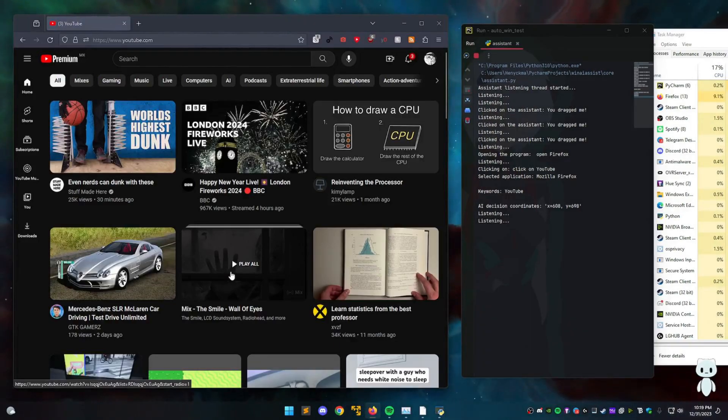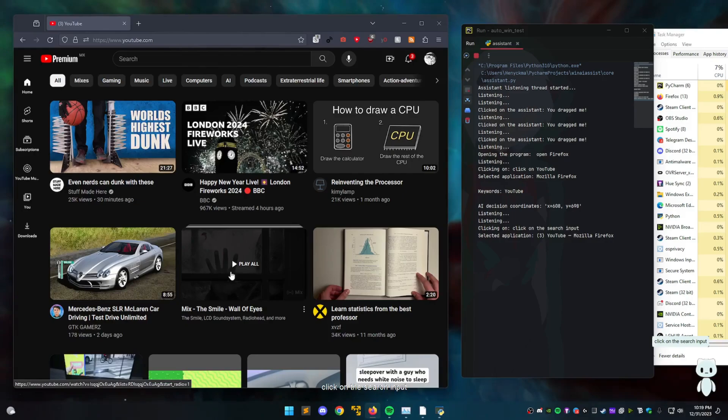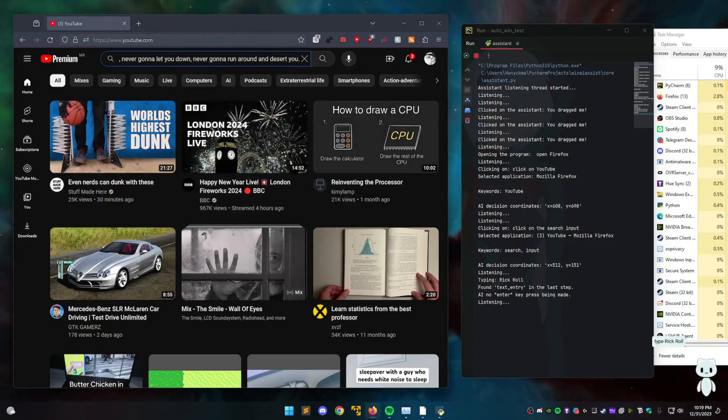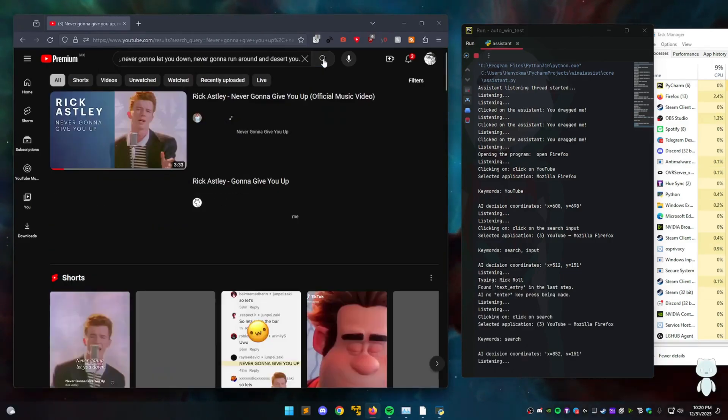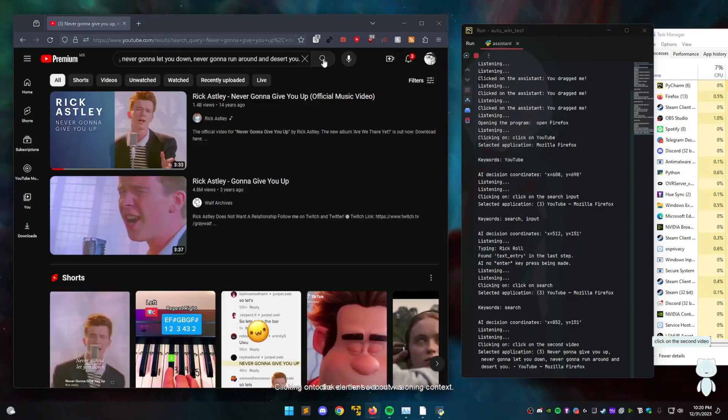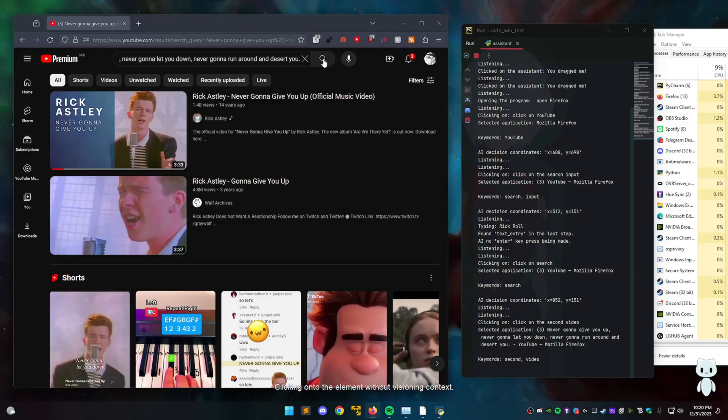Click on the search input. Clicking onto the element without visioning context. Type Rick roll. Click on search. Clicking onto the element without visioning context. Click on the second video. Clicking onto the element without visioning context.